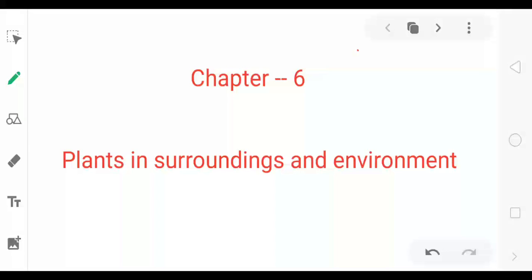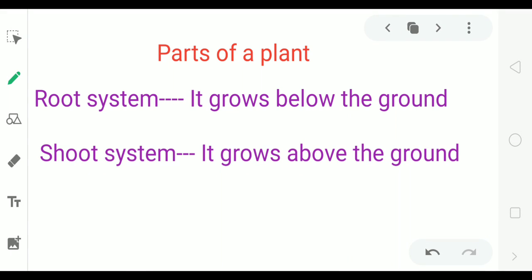Dear students, today we will do chapter six on environment. First topic is parts of plant. Plants have different parts like root, stem, leaves, branches, buds, flowers and fruits. These different parts of a plant can be divided into two systems.